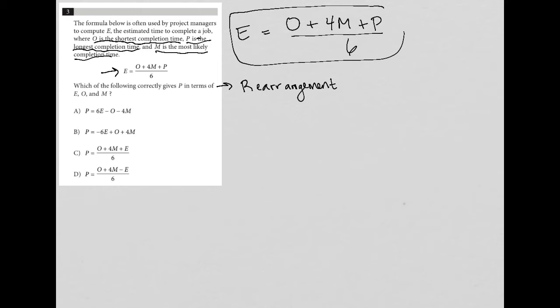So we take this original equation and we want to rearrange it to the point where we have P equals. That's what it means by P in terms of. We want all these other letters E, O, and M somehow on this side of the equal sign and P to be on the left side.